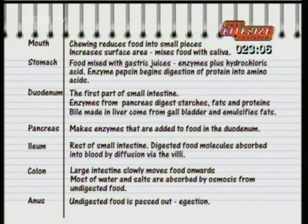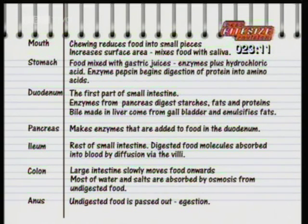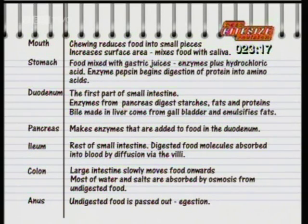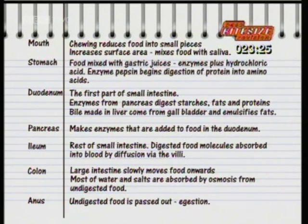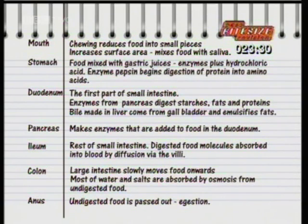In the stomach, food is mixed with gastric juices containing hydrochloric acid and the enzyme pepsin, which begins to break down the proteins. The part-digested food is then squeezed into the duodenum, the first part of the small intestine. Here, enzymes from the pancreas digest starches, fats and proteins. Bile made in the liver comes from the gallbladder and emulsifies fats.